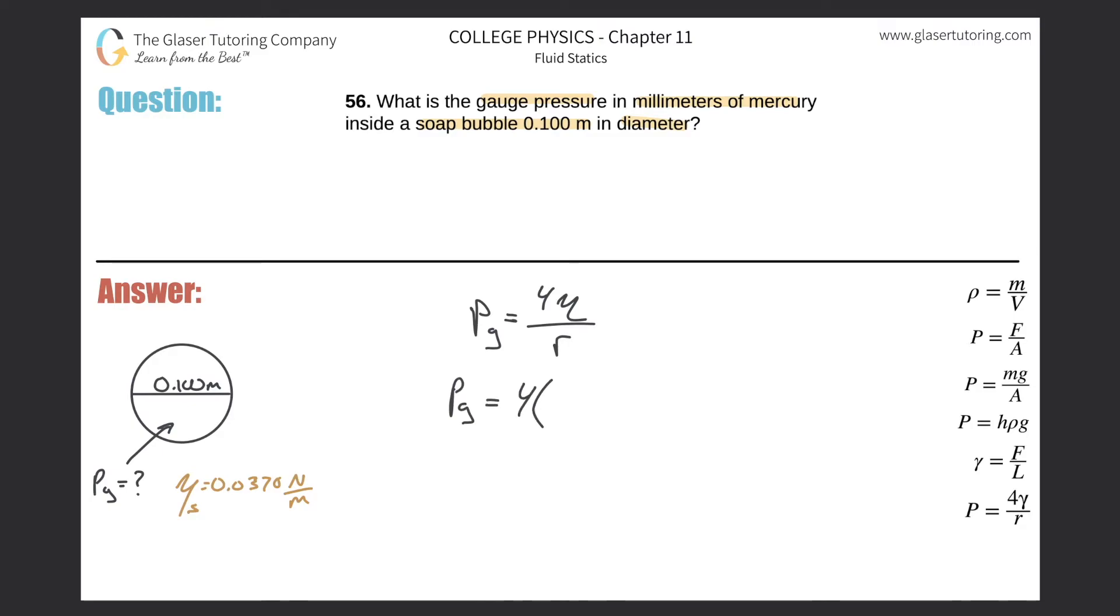So this is four times then the surface tension of 0.0370, all divided then by the radius, which is going to be the diameter that they gave us divided by two. So this should be fairly straightforward. So four times 0.037 divided then by 0.05 essentially.